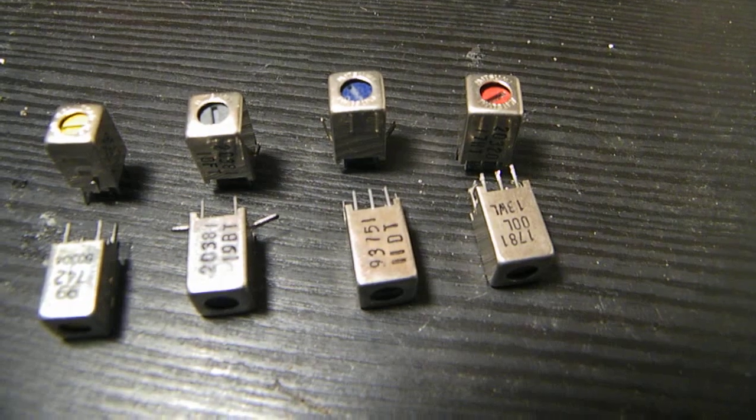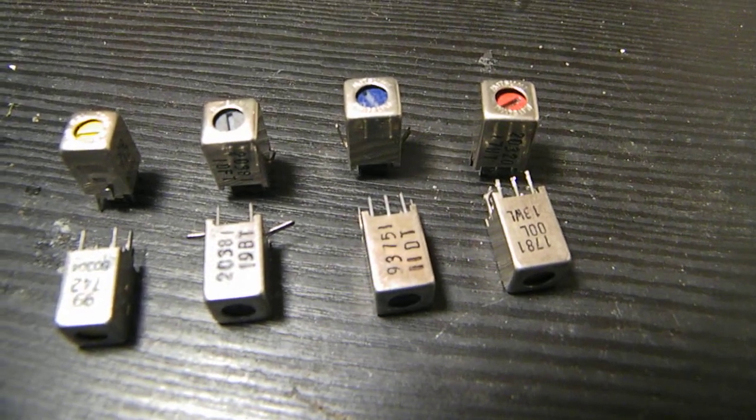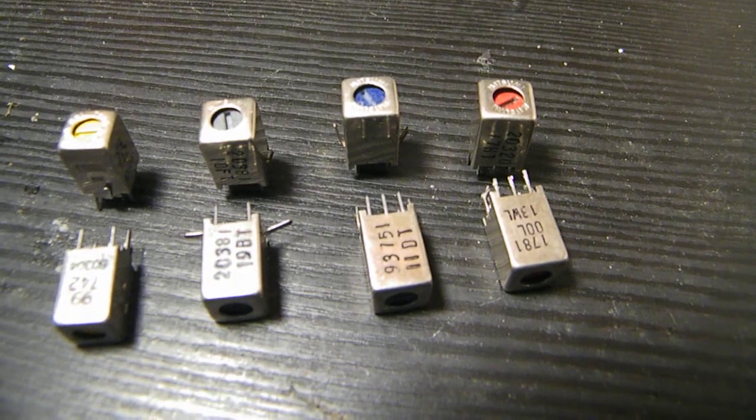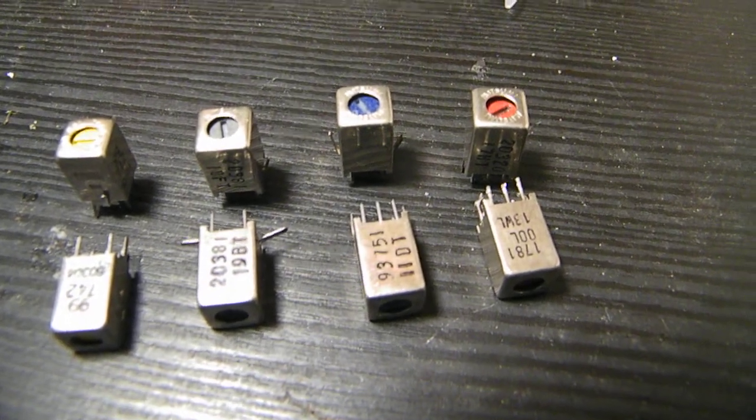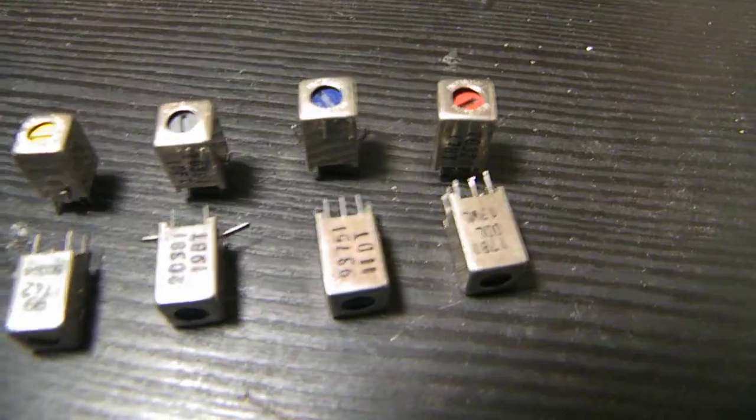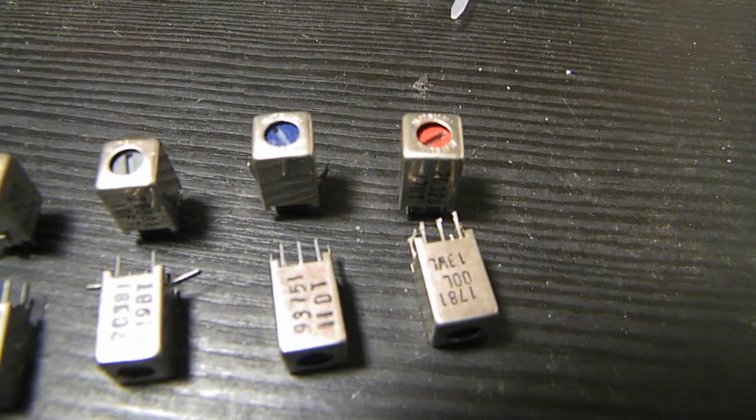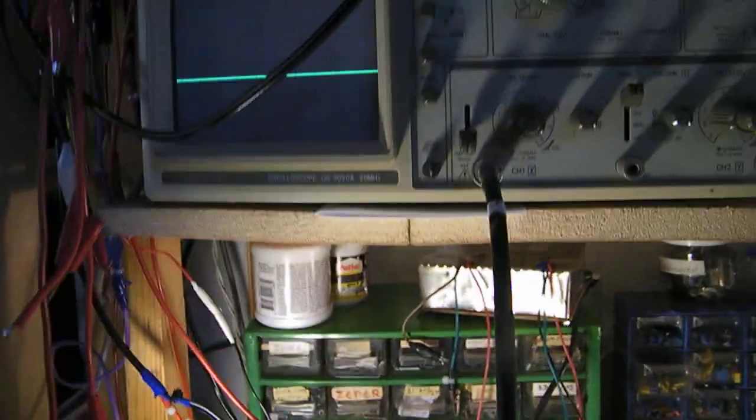But I added a capacitor of 390 pF over that coil and also the variable capacitor. That meant I took the frequency from this red unit down to lower frequencies, and they are here.